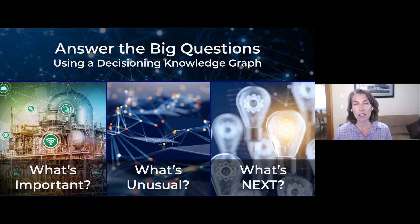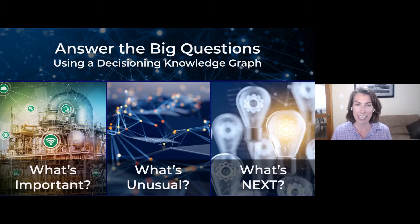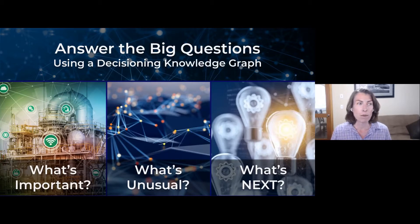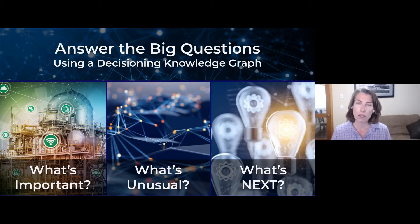The decisioning knowledge graph can help you answer the big questions that you have — things like: what's important in my data? What's influential? What kind of things might be influencing my customers? What's unusual? Are there patterns or anomalies that I can't see? And what's coming next as well?